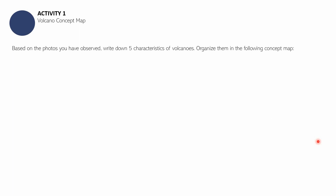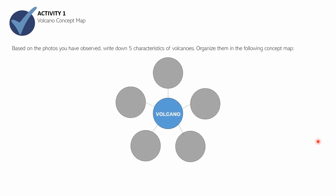Based on your notes, write down five characteristics of volcanoes and organize them into the following concept map. This concept map is pretty simple — it uses circles. At the center circle, in blue, is the word 'volcano.' In the surrounding circles, put unique characteristics of volcanoes — one unique characteristic per circle. You can make this more creative: you can make it a flower shape, a sun shape — it's up to you. I'll be giving you a moment to finish your concept maps.